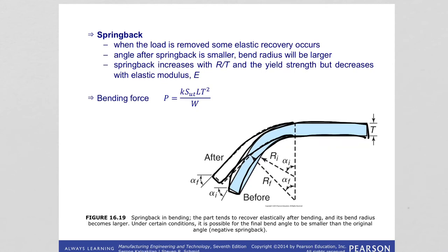Springback is found to increase with increasing R/T ratio and yield strength, but it decreases with increasing elastic modulus. How can you compensate for springback? You can do overbending to compensate for springback, and you can also design certain bending operations that might prevent this type of elastic recovery.